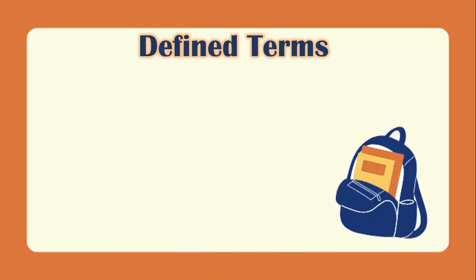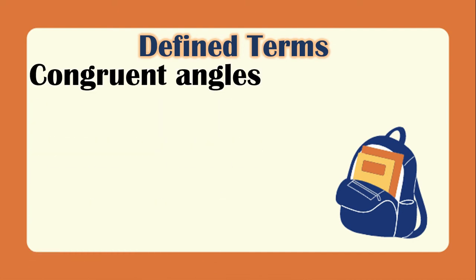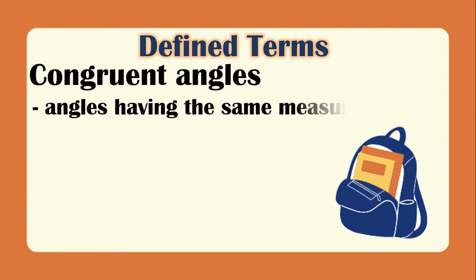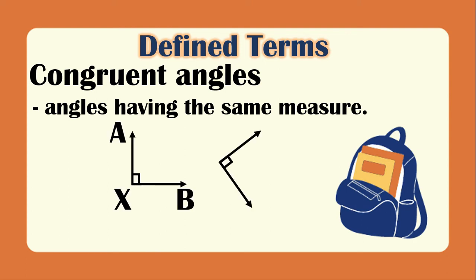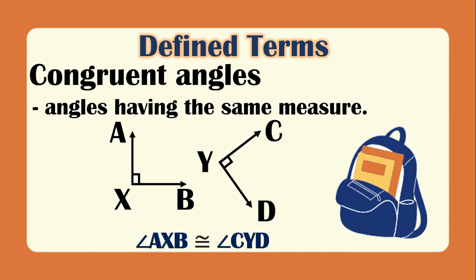Congruent angles are angles that have the same measure. For example, angle AXB is congruent to angle CYD because they are both right angles.